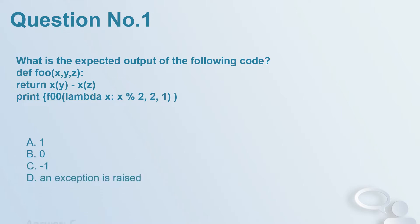Question number 1. What is the expected output of the following code? def foo(x, y, z): return x(y) - x(z) print foo(lambda x: x % 2, 2, 1). Options: A. 1, B. 0, C. -1, D. An exception is raised. Answer: C.